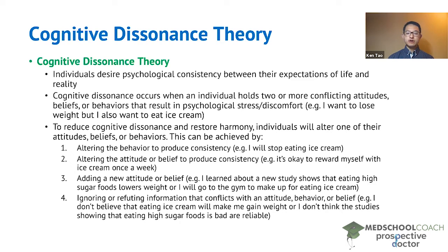First, the individual can alter the behavior to produce consistency. So considering the example before, the individual might decide that they will stop eating ice cream. In that case, if they stop eating ice cream and they want to lose weight, those two are no longer in conflict with each other.